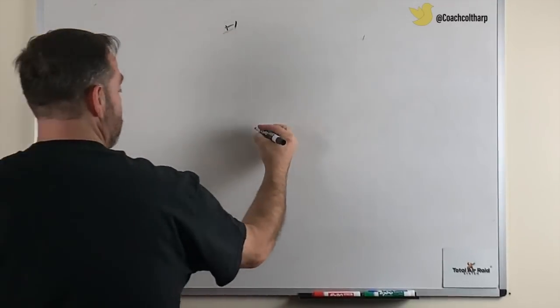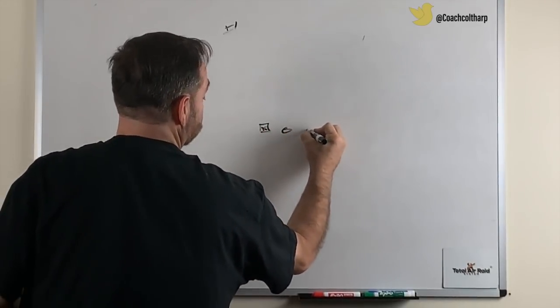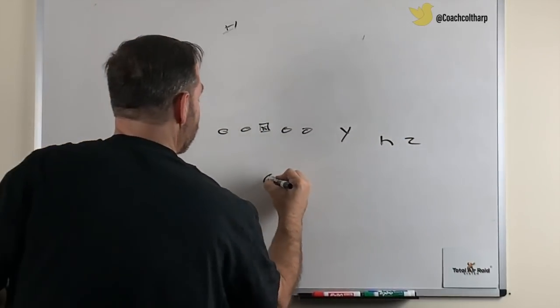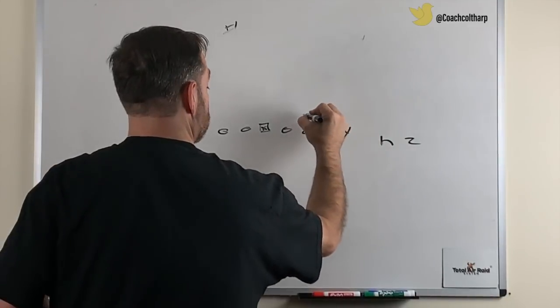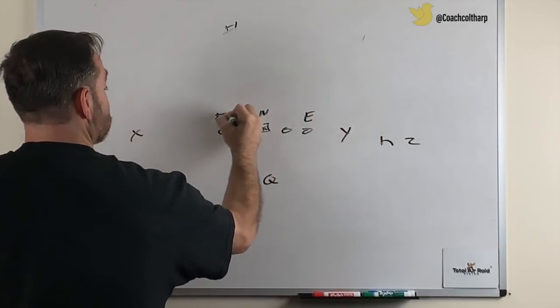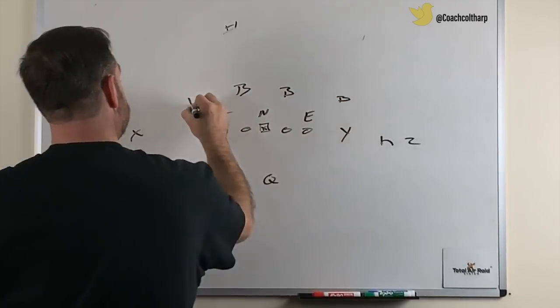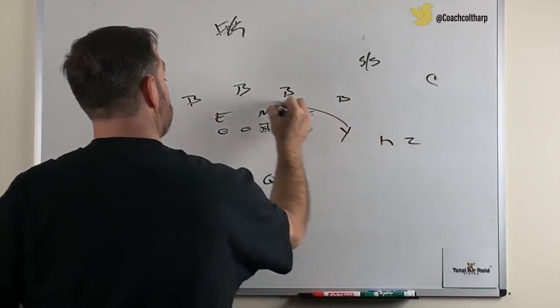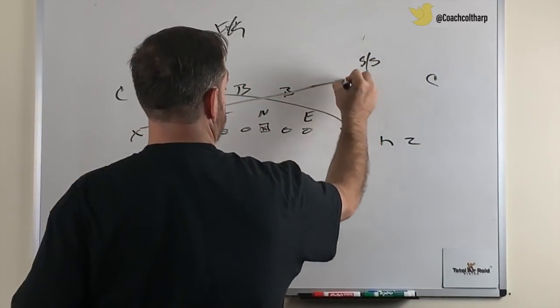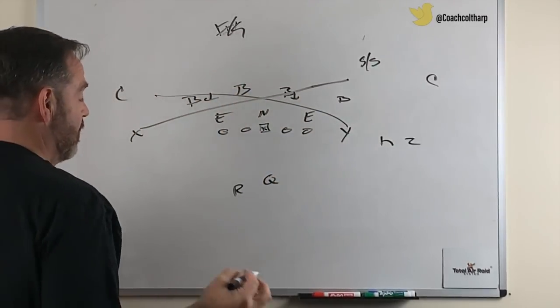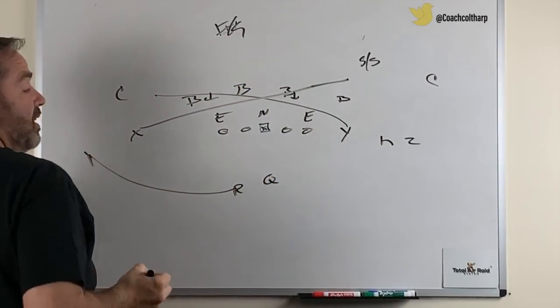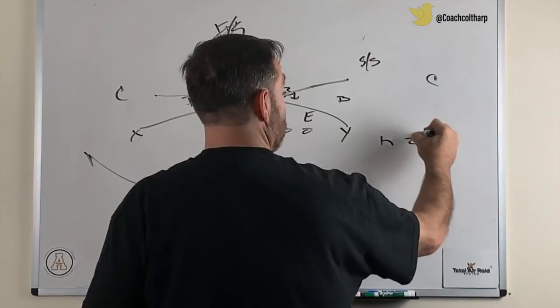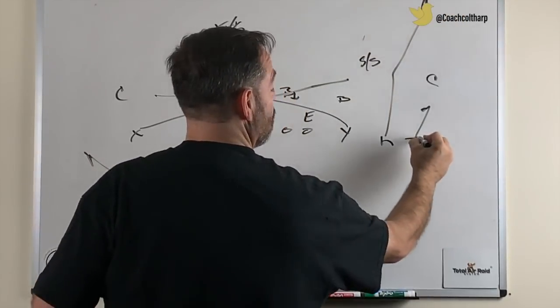The second way is kind of one of the Coach Mumme concepts and what he did is he started combining mesh with the run and shoot routes. Let's just put a 3-4 up here just for giggles. And so what he did is he took the mesh route with Y and X and then obviously they would sit or climb depending on what was going on. R would always go this way in this situation.